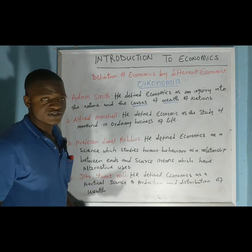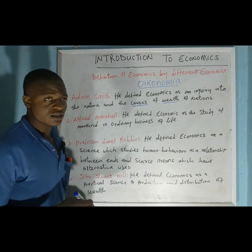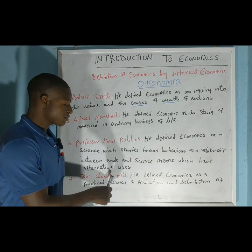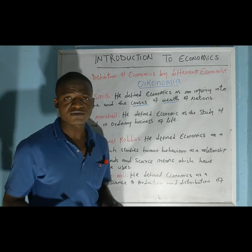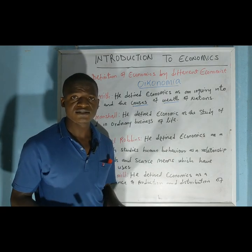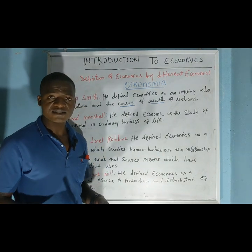The last definition is by John Stuart Mill. John Stuart Mill defined economics as a practical science of production and distribution of wealth.